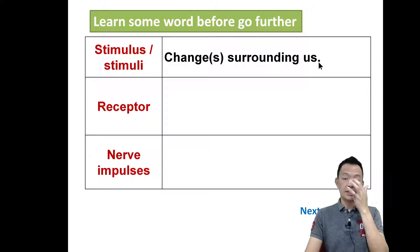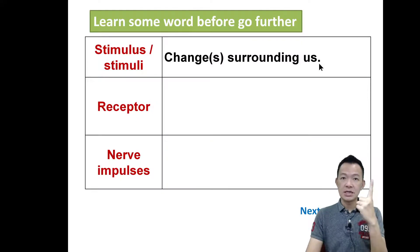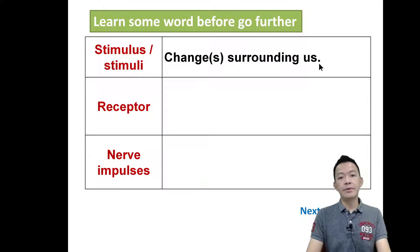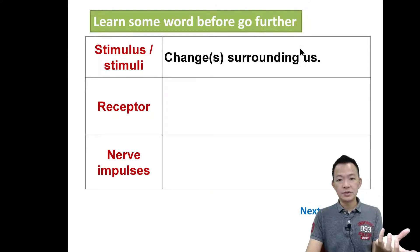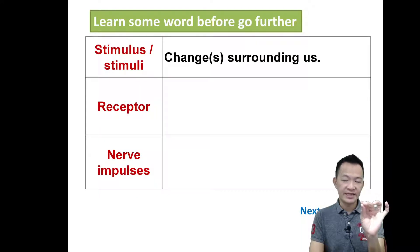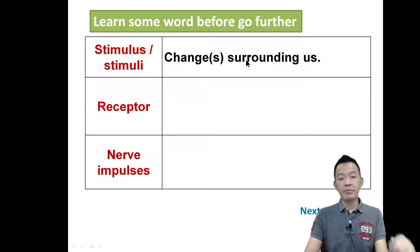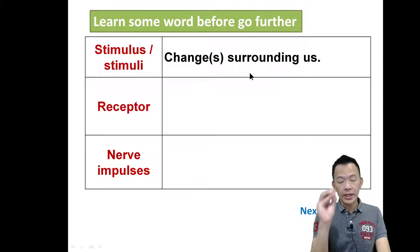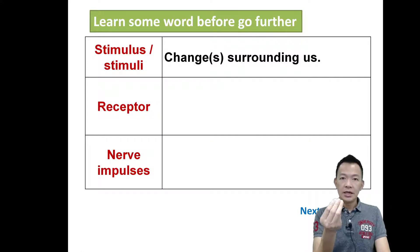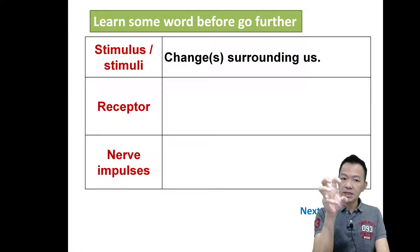The first word is 'stimulus' — plural 'stimuli.' What does stimulus mean? It means the changes in the surrounding environment, things that stimulate you. For example, black color, white color — these are examples of stimuli surrounding us, changes in the surrounding environment.